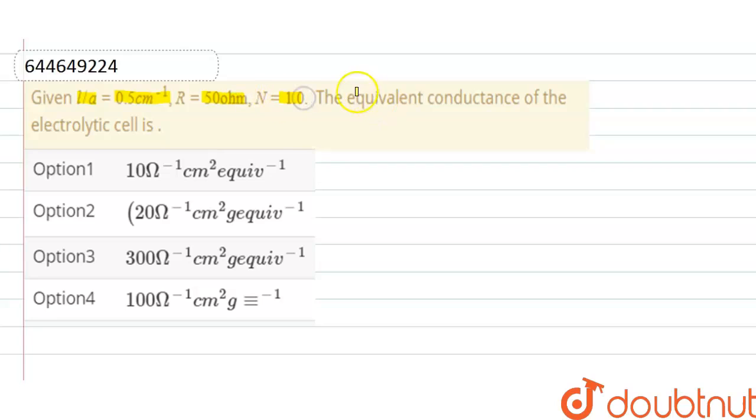The equivalent conductance of the electrolytic cell is... okay, so here we have to find out equivalent conductance.